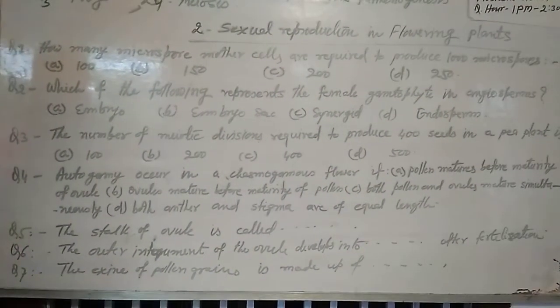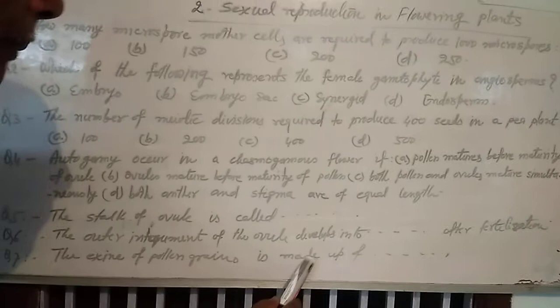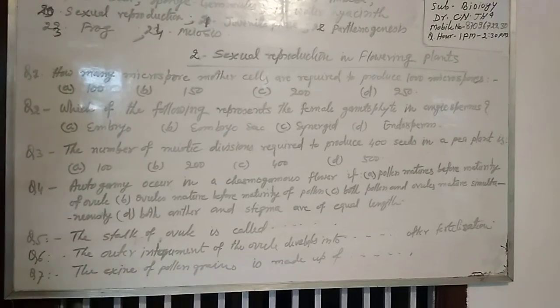Question 7. The enzyme of pollen grains is made up of [blank]. These are some important questions of Chapter 2.